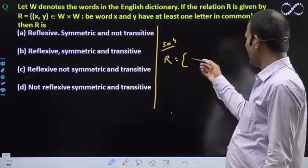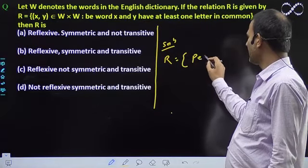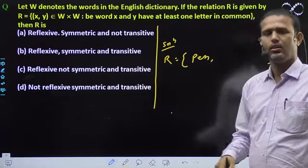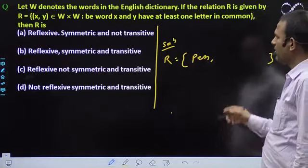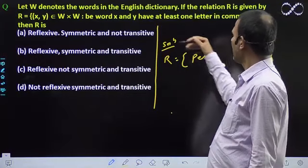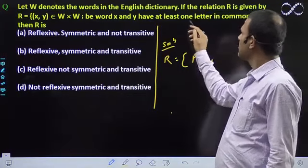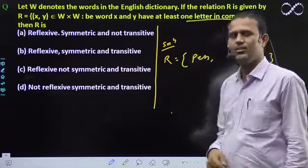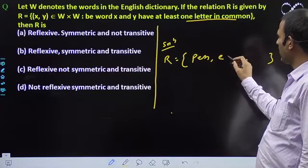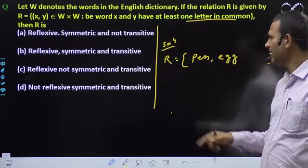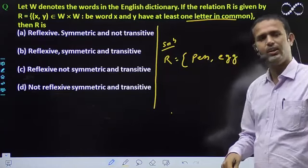Let's take any word, like suppose 'pain'. For the second word, at least one letter must be common. At least one word means if I write 'e', then 'e' is here and 'e' will also appear there.